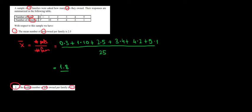We have 0 pets in 3 families meaning 3 observations of 0 pets. Then we have 10 observations of 1 pet so we have 1, 2, 3, 4, 5, 6, 7, 8, 9, 10.